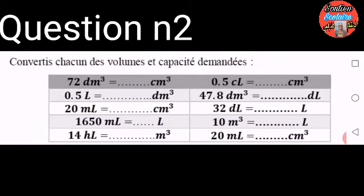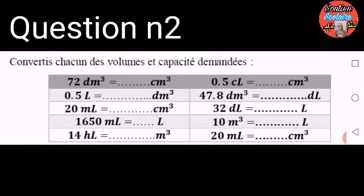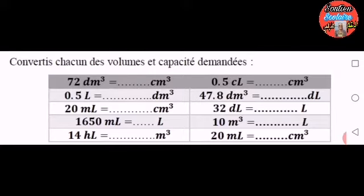Exercice numéro 2. Convertis chacun des volumes et capacités demandées. 72 décimètres cubes égale combien de centimètres cubes ? 0,5 litre égale combien de décimètres cubes ? 20 millilitres égale combien de centimètres cubes ? 1650 millilitres égale combien de litres ?